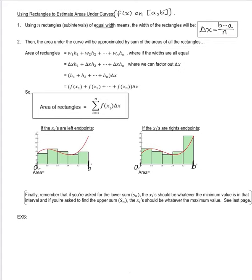The first thing we always want to figure out is the width of our rectangles. The area of rectangles is simply width times height. So if I have n rectangles, we start by taking width times height of the first, plus width times height of the second, all the way up to the last one. Each of these widths defaults to delta x, so since delta x is in every term, we can factor it out — and that's what you see in that third row.